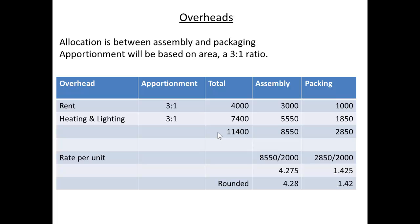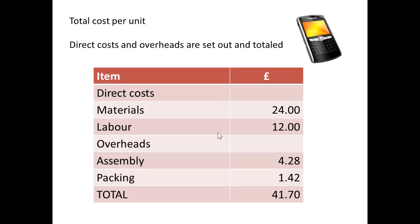The rate per unit simply means dividing those amounts — £8,550 and £2,850 — by the 2,000 units produced. Rounding those figures, we get a cost per unit of £4.28 from the assembly department and £1.42 from the packing department. So the total cost per unit is: £24 for materials, £12 for labour, £4.28 for assembly, £1.42 for packing — giving a total cost per unit of £41.70.